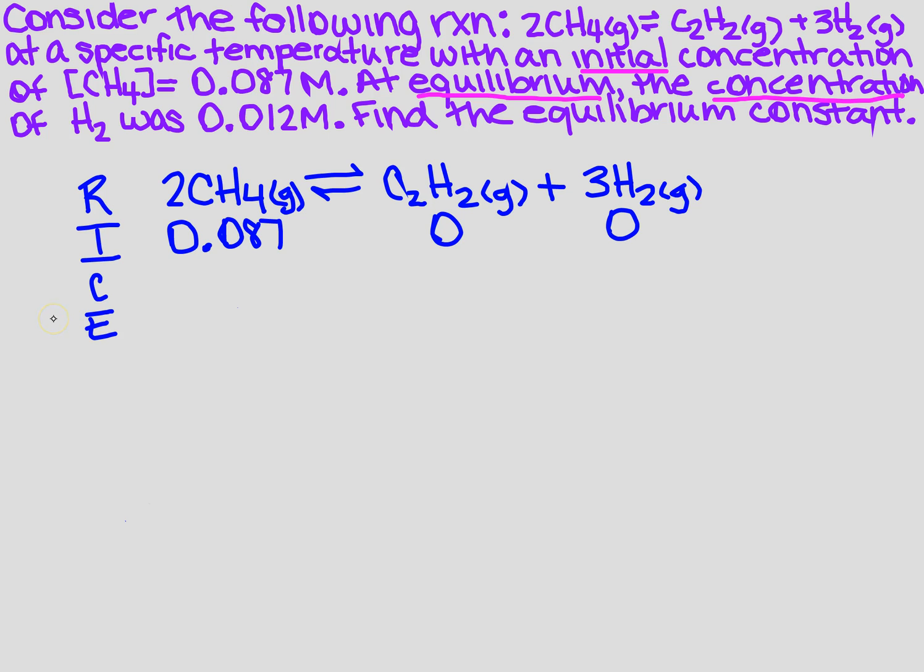What was the change? Well, I know what it was at equilibrium. It says that the H2 was 0.012. So now, in order to get 0 plus something to be 0.012, I have to add that number to it.